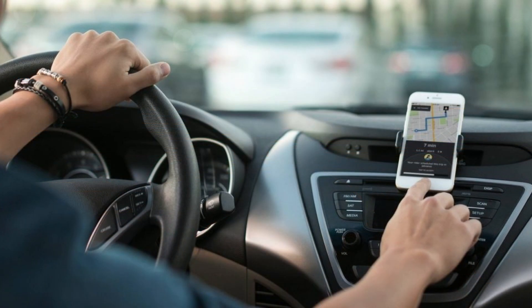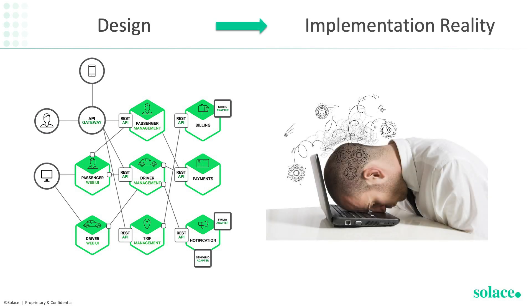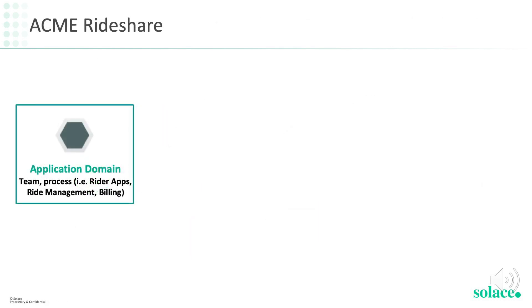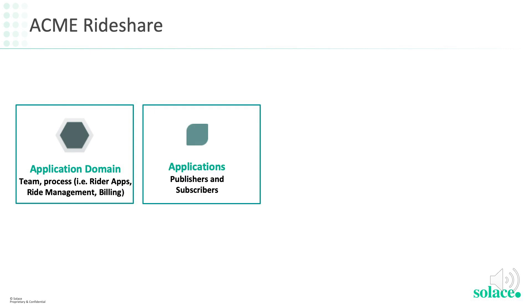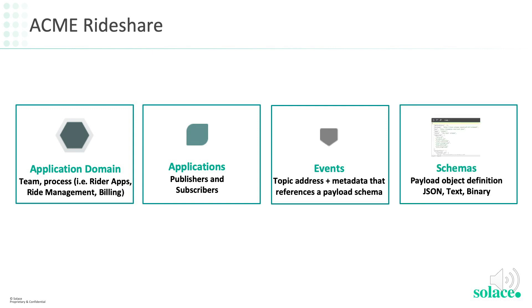Many of you likely use popular rideshare apps like Uber and Lyft, but have you ever wondered what it takes to design and implement such an app, or anything similar that uses an event-driven architecture? As anyone who has tried to build anything knows, it's faster and easier to write down a vision than to implement it. Say you are an architect or developer tasked to design an event-driven rideshare service for Acme Rideshare — you need to decide and choreograph the relationships between the various apps, the events they must publish or subscribe to, and the payload schema of those events.